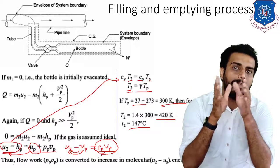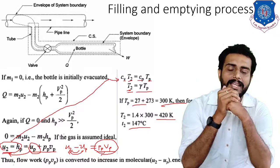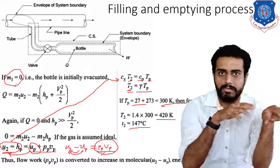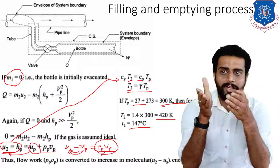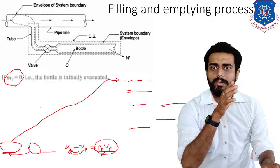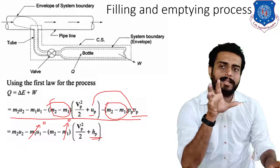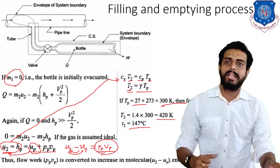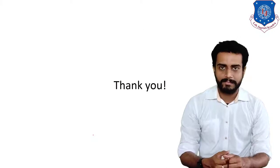This is the example of completely filling the bottle. If the bottle is completely empty at the end — that is, the emptying case — then instead of M1, you take M2 as 0, and derive accordingly. The equation becomes M1·U1 - M1·(Vp²/2 + Hp), and we can neglect terms in the same way. That is how you derive the equation for filling and emptying process. Today we will keep it up to this point. Thank you.